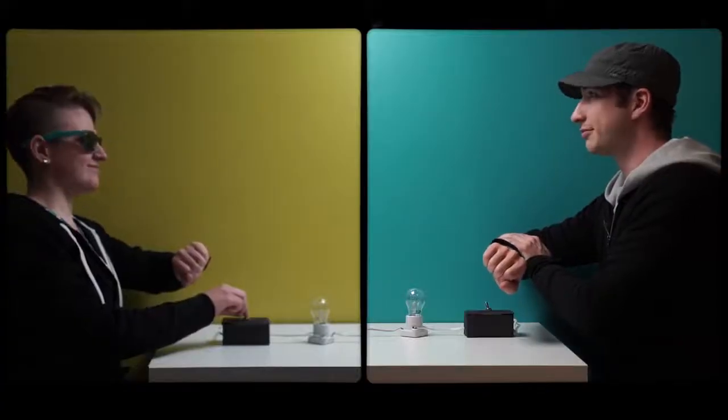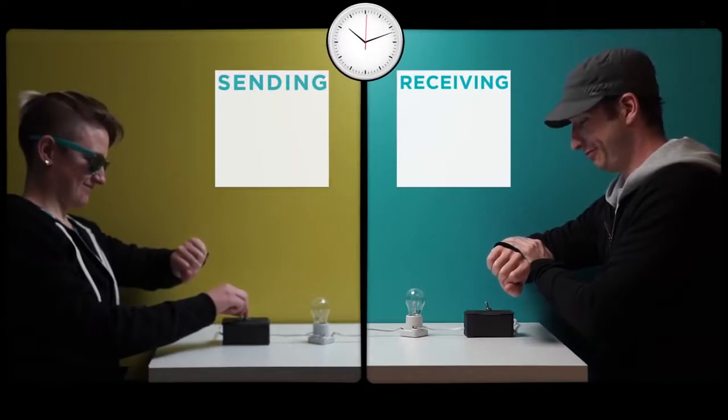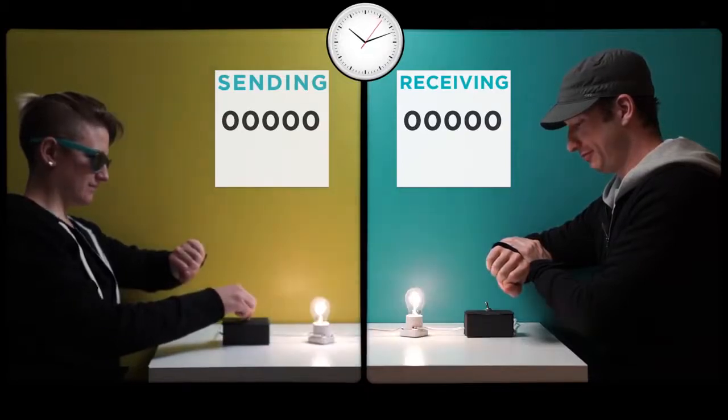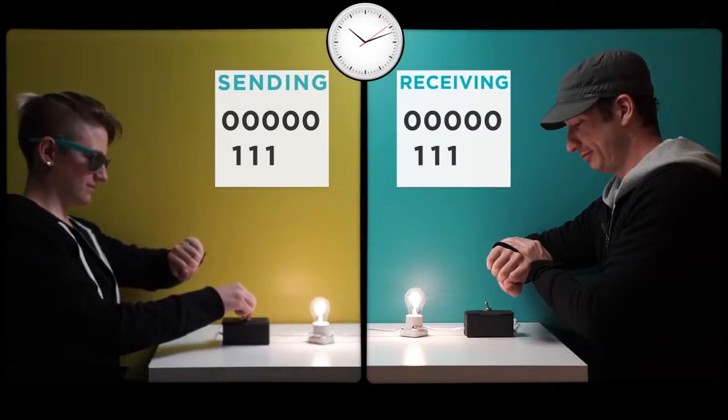The operators can agree that the sender will send one bit per second, and the receiver will sit down and record every single second and see what's on the line. To send five zeros in a row, you just turn off the light, wait five seconds, the person on the other end will write down all five seconds. Five ones in a row, switch it on, five seconds, write down every second.